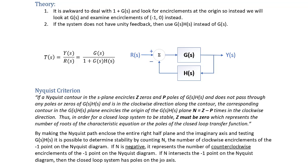The Nyquist criterion states: if a Nyquist contour in the s-plane encircles Z zeros and P poles of G(s)H(s), does not pass through any poles or zeros of G(s)H(s), and is traversed in the clockwise direction, the corresponding contour in the G(s)H(s) plane encircles the origin N = Z minus P times in the clockwise direction. For a closed-loop system to be stable, Z must equal zero, meaning there are no poles of the closed-loop transfer function in the right half plane.